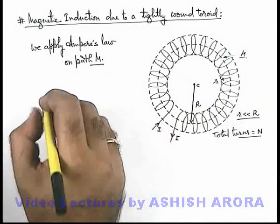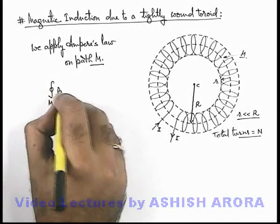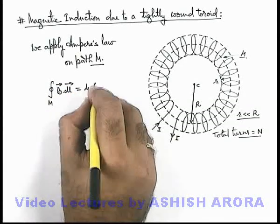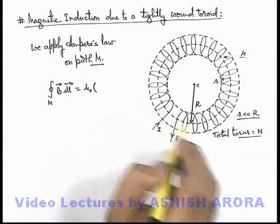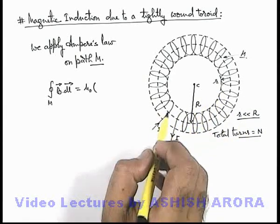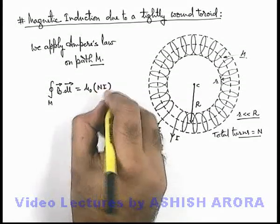And in this situation, if we apply Ampere's law, it is written as: for the closed path M, ∮B·dl equals μ₀ multiplied by the enclosed current by the path. You can see all N turns are enclosed into it, and in each turn a current I is flowing, so we can simply write enclosed current is NI.